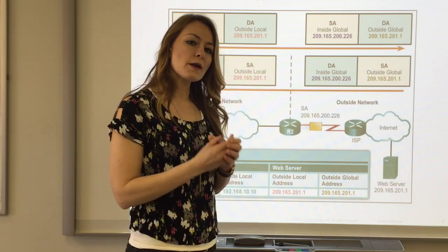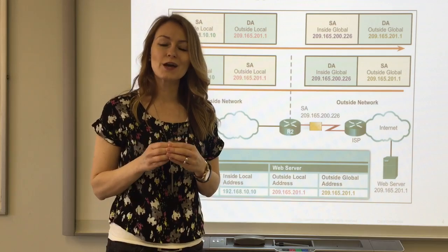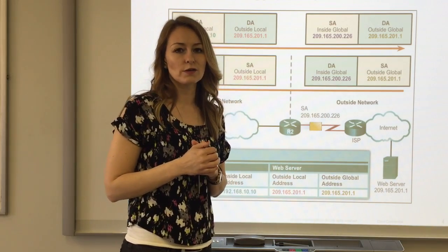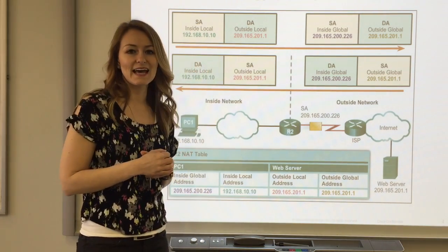When that packet gets to the NAT enabled router, it translates 209.165.200.226 into 192.168.10.10.